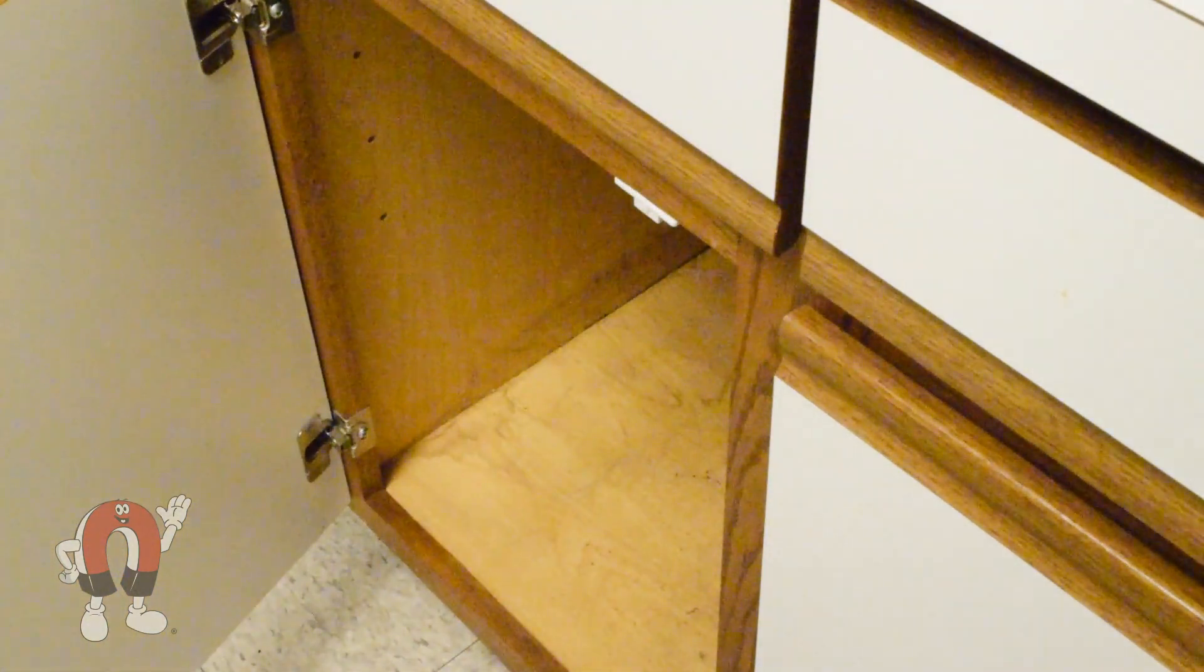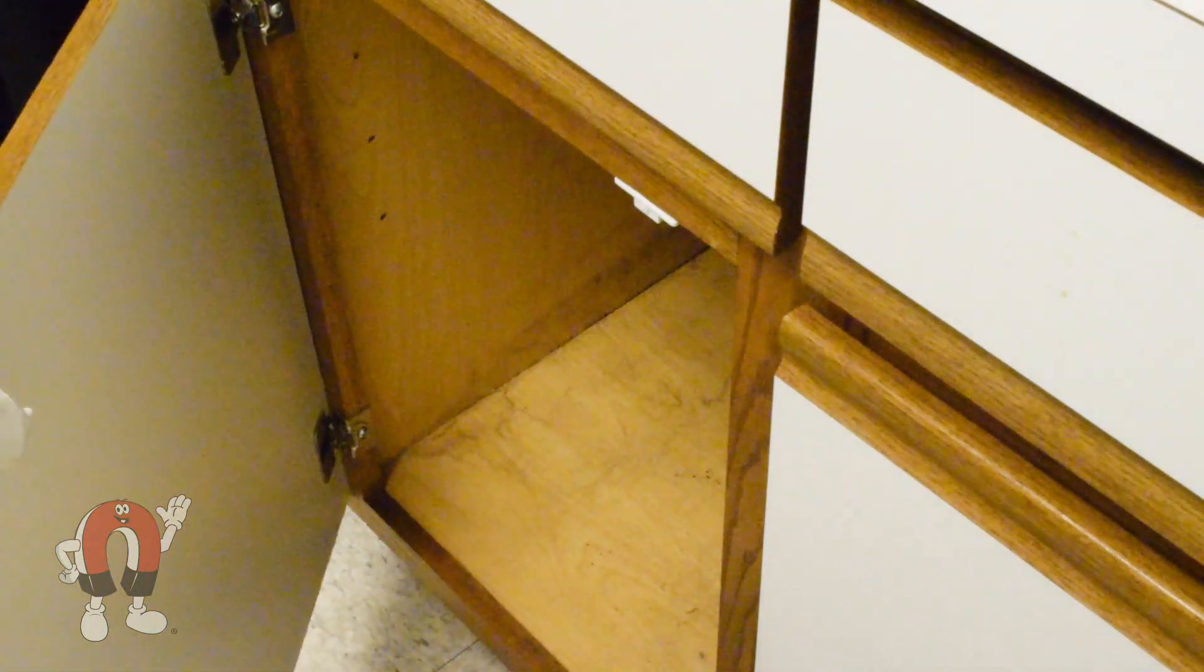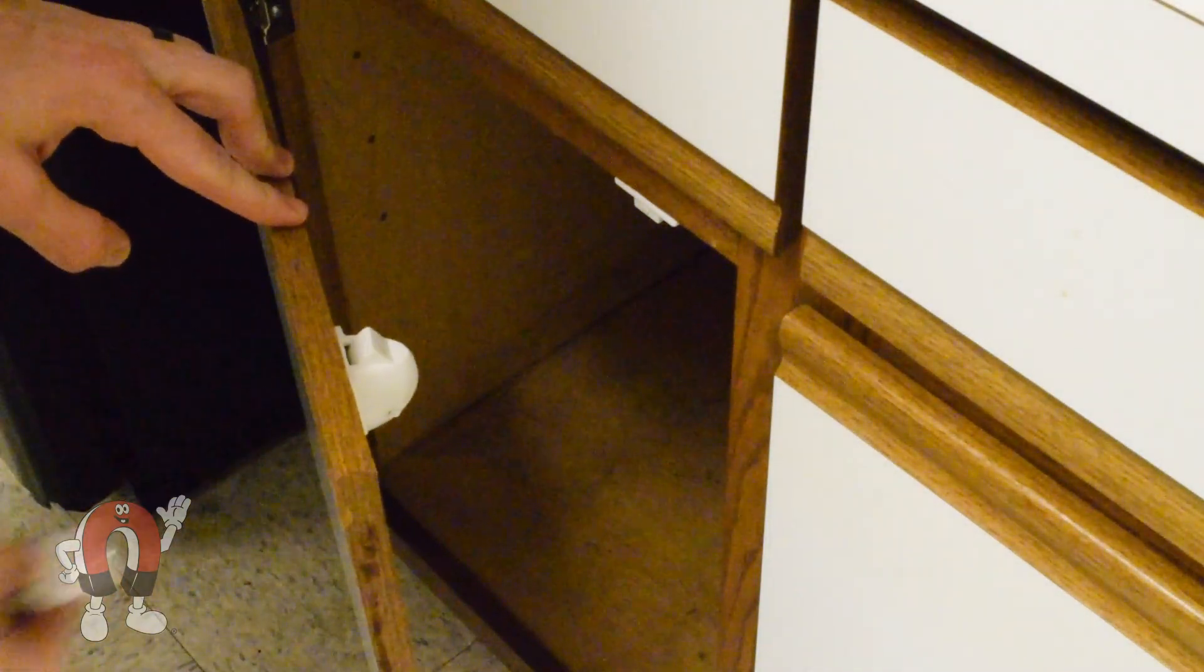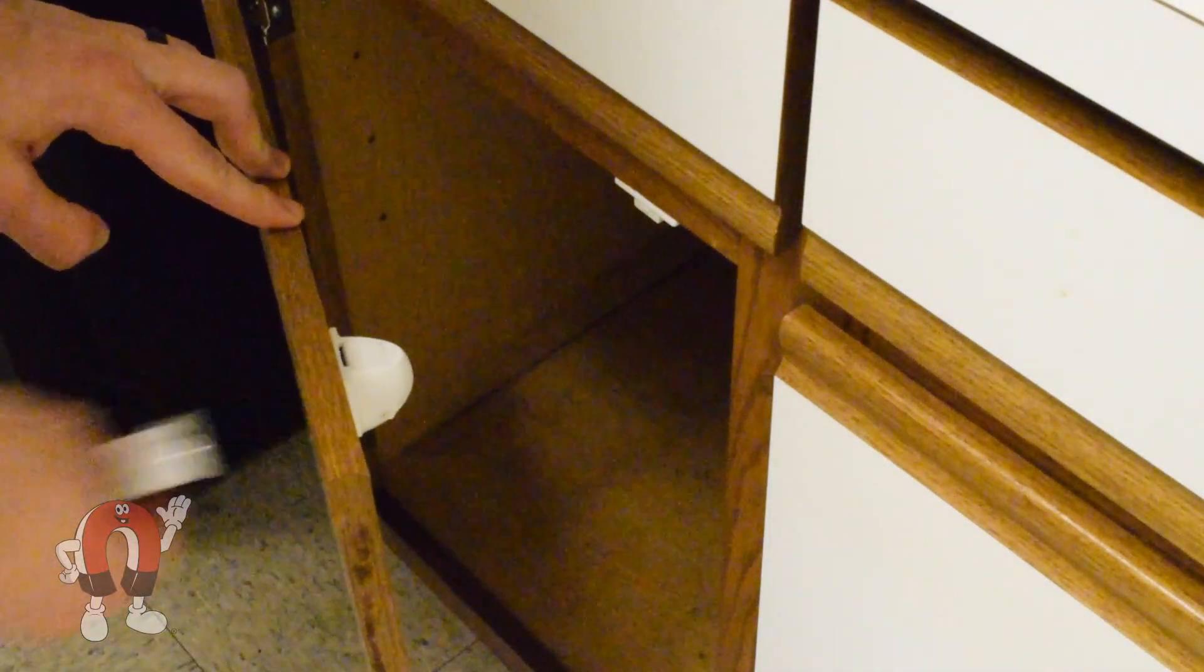This month we'll take a look at some magnetic locks. These are often used as child safety locks and they consist of a latch piece and a magnetic key. We'll take a look at two different designs, how they work, and how you can open them if you lose the key.